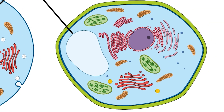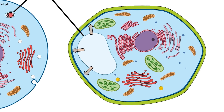Plants also use a vacuole to store some byproducts, but plants use their vacuole for another purpose altogether. In most plant cells, there is one large vacuole that sits in the middle of the cell. When it is filled with water, it pushes outward on the cell wall. This is known as turgor pressure, and it gives plants the ability to stand tall without any bones or solid support structures.